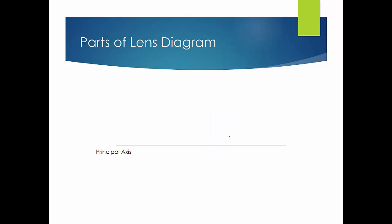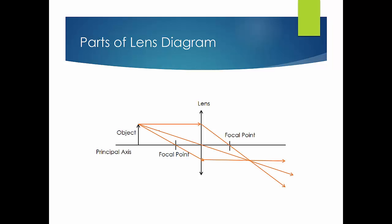The parts of a lens diagram: first is the principal axis, which is an imaginary line that cuts through the center of the lens. The converging lens is represented by a standard symbol and always has two focal points, one on the left and one on the right. The object is indicated by a single arrow, and where the drawn light rays intersect is the image location.